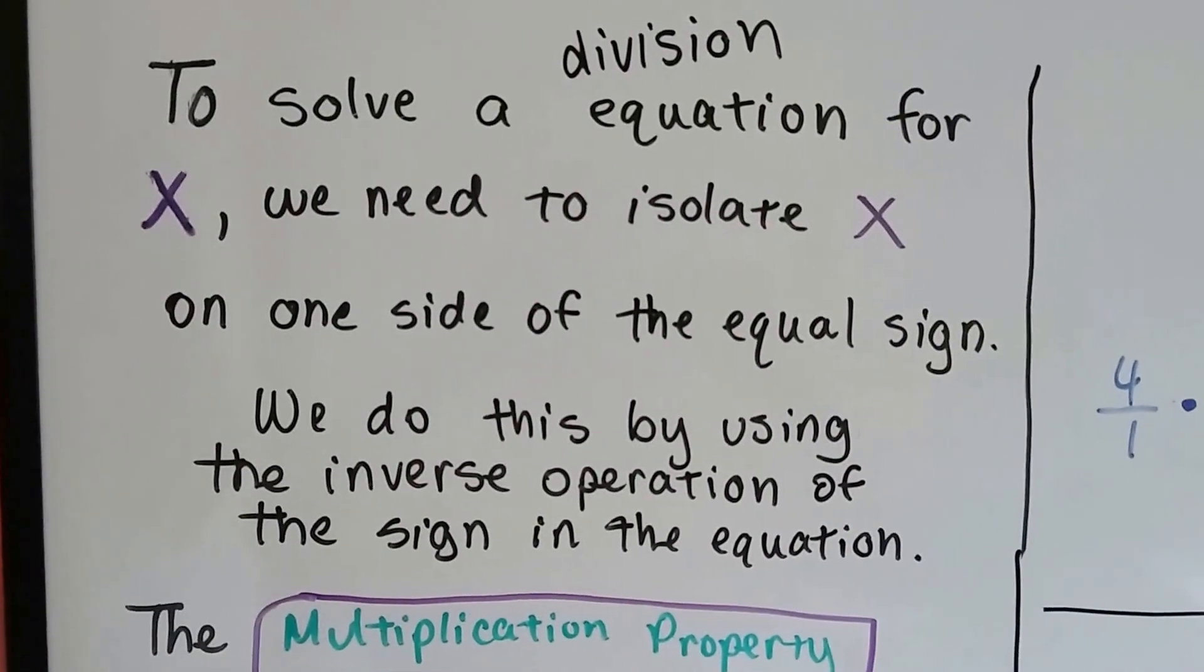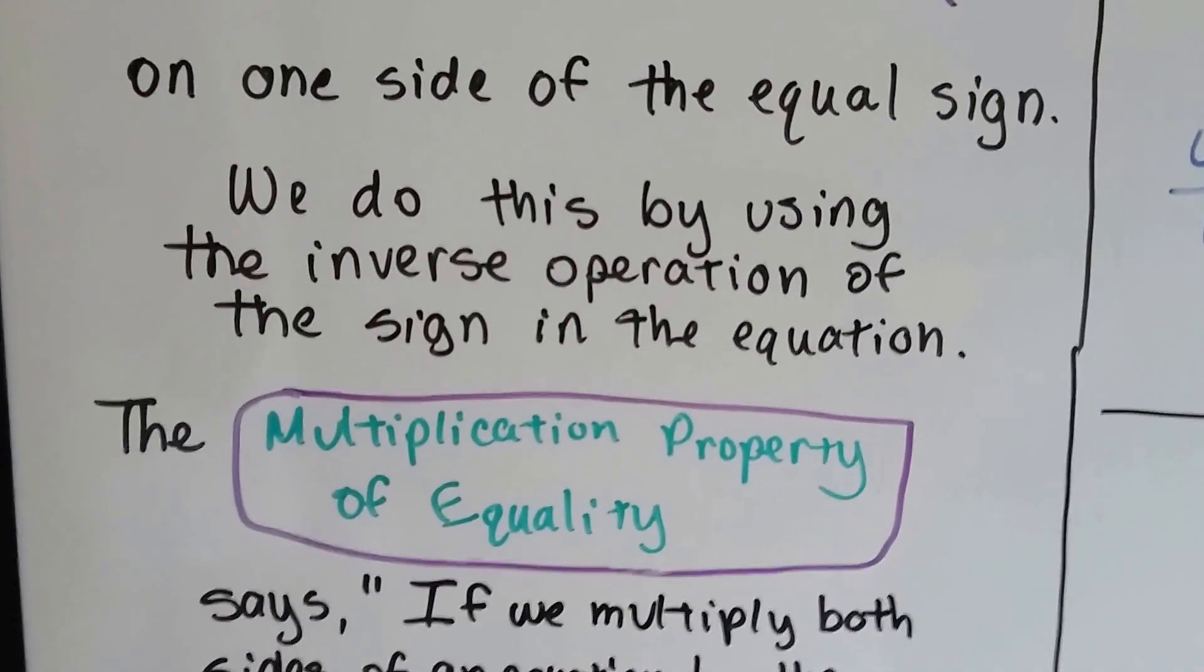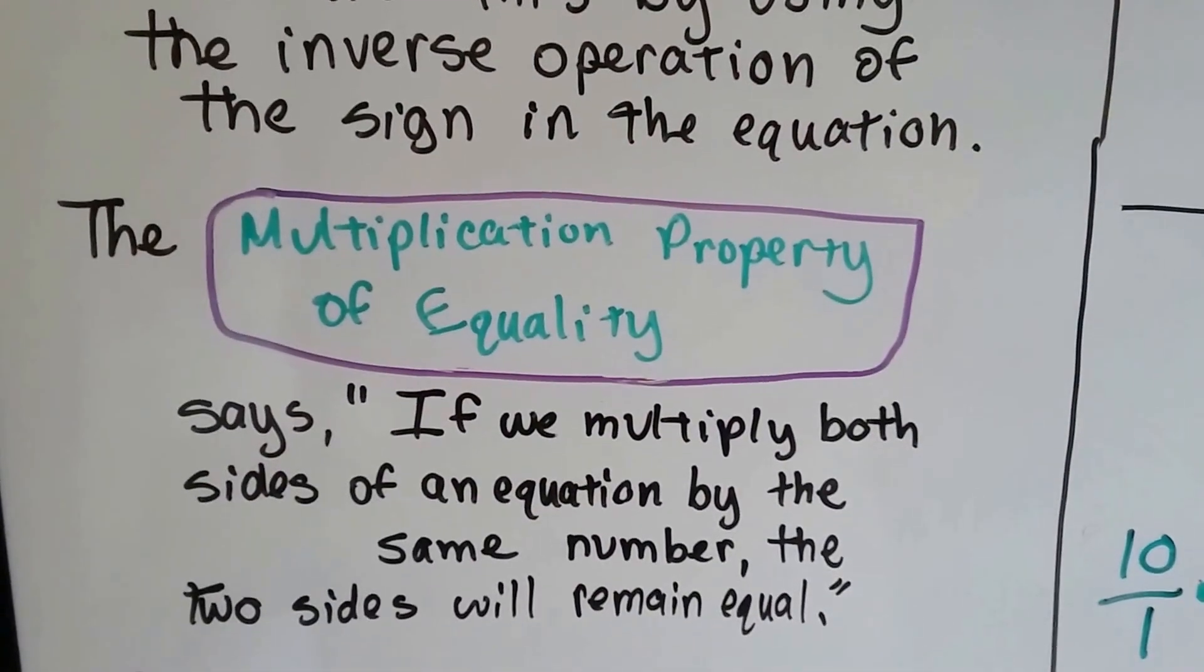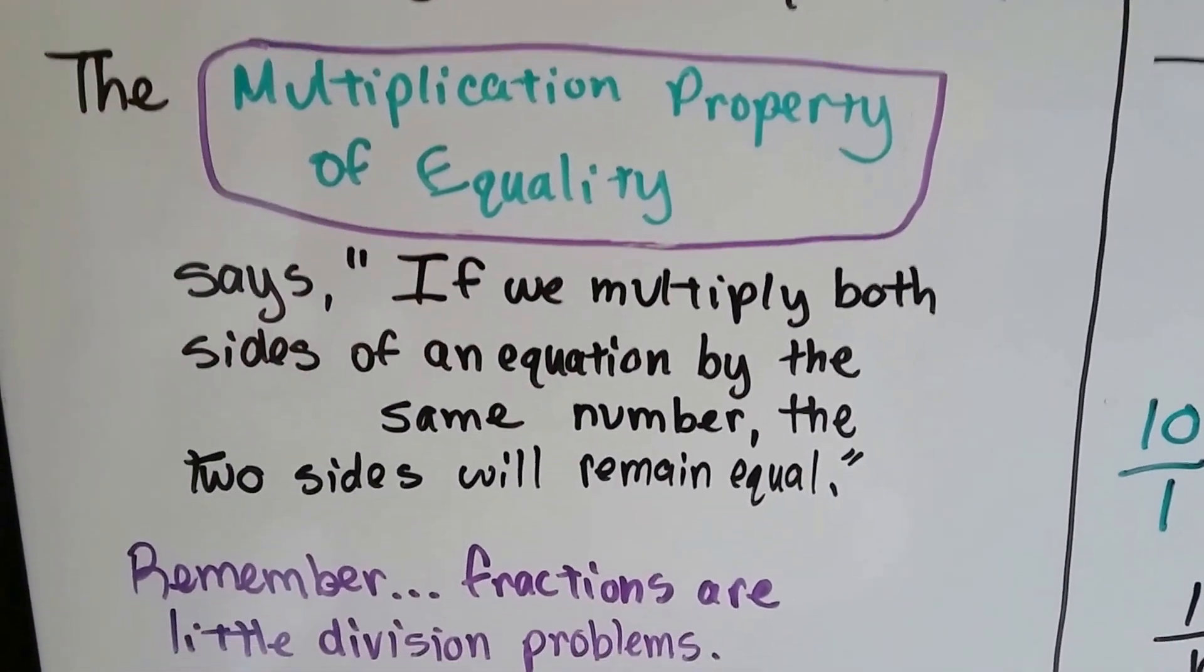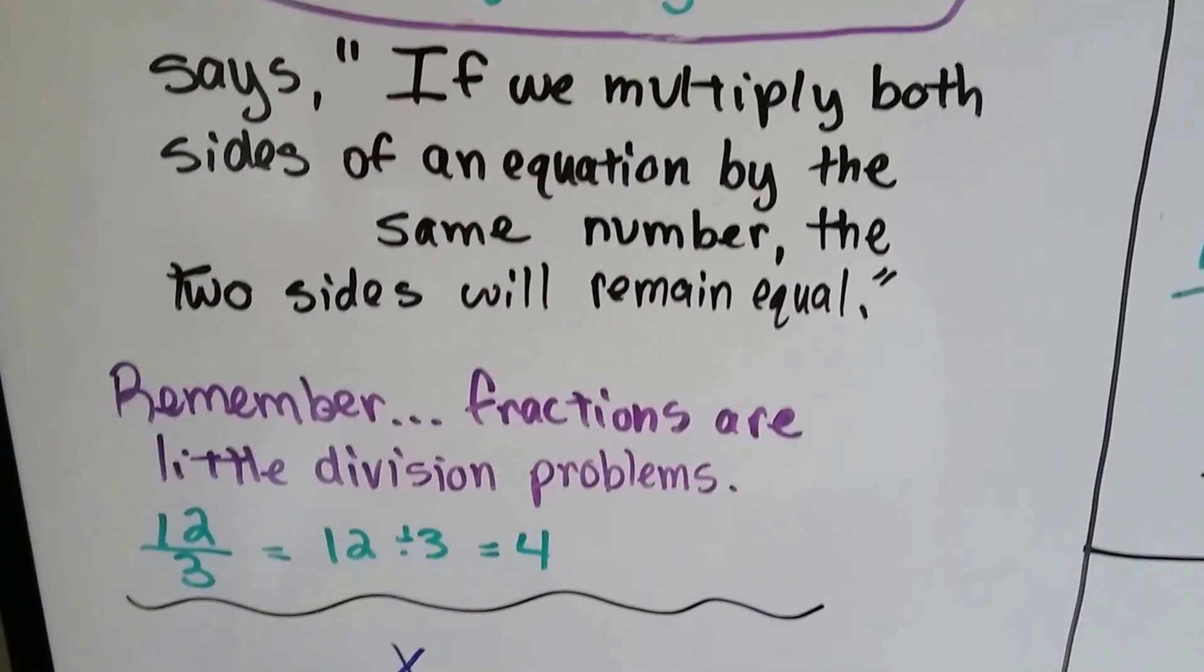To solve a division equation for x, we need to isolate the x on one side of the equal sign. We do this by using the inverse operation of the sign in the equation. If it's a division problem, we use the multiplication property of equality. It says if we multiply both sides of an equation by the same number, the two sides will remain equal.